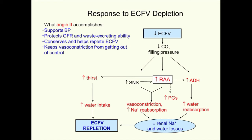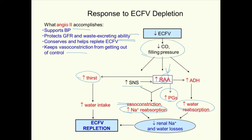To summarize what happens in volume depletion: low cardiac output and filling pressures activate the baroreceptors and increase the activity of the sympathetic and renin-angiotensin systems, resulting in upregulation of angiotensin II synthesis. A2 then helps out because it supports blood pressure via vasoconstriction, protects GFR despite decreased renal blood flow by constricting efferent arterioles and increasing filtration fraction, helps to conserve remaining ECF volume by increasing sodium and water reabsorption, increases thirst to help replete ECF volume, and increases prostaglandin synthesis to help modulate vasoconstriction. These actions allow further fluid losses to be kept to a minimum and also allow repletion of ECF volume.